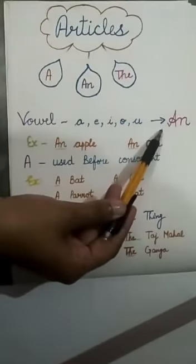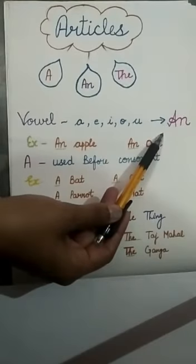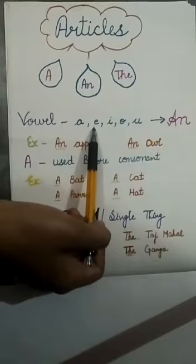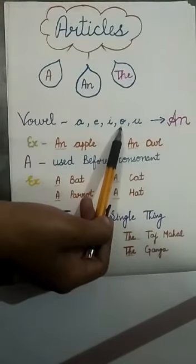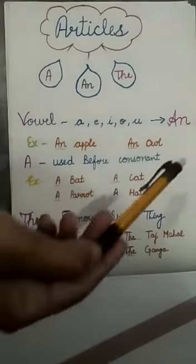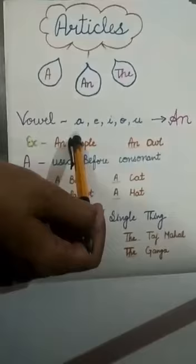AN is used before vowel. Vowel A, E, I, O, U. These are the vowels. In A to Z we know there are five vowels and the remaining are consonants. So AN is used before vowel.